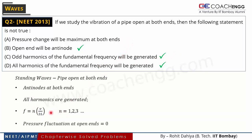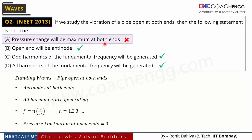Let us verify option A: if a pipe has open ends, the pressure fluctuation at open ends is zero. Open ends are exposed to the atmosphere, so the pressure at open ends remains atmospheric throughout — there is no fluctuation. So option A is wrong: pressure change will be zero at both the ends, it will NOT be maximum. So option A was the correct (false statement) answer.